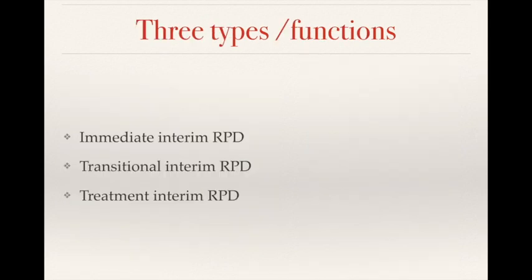We can also divide interim removable partial dentures into three different types based on their functions: the first is the immediate interim removable partial denture, the second is the transitional interim removable partial denture, and the third is the treatment interim removable partial denture.